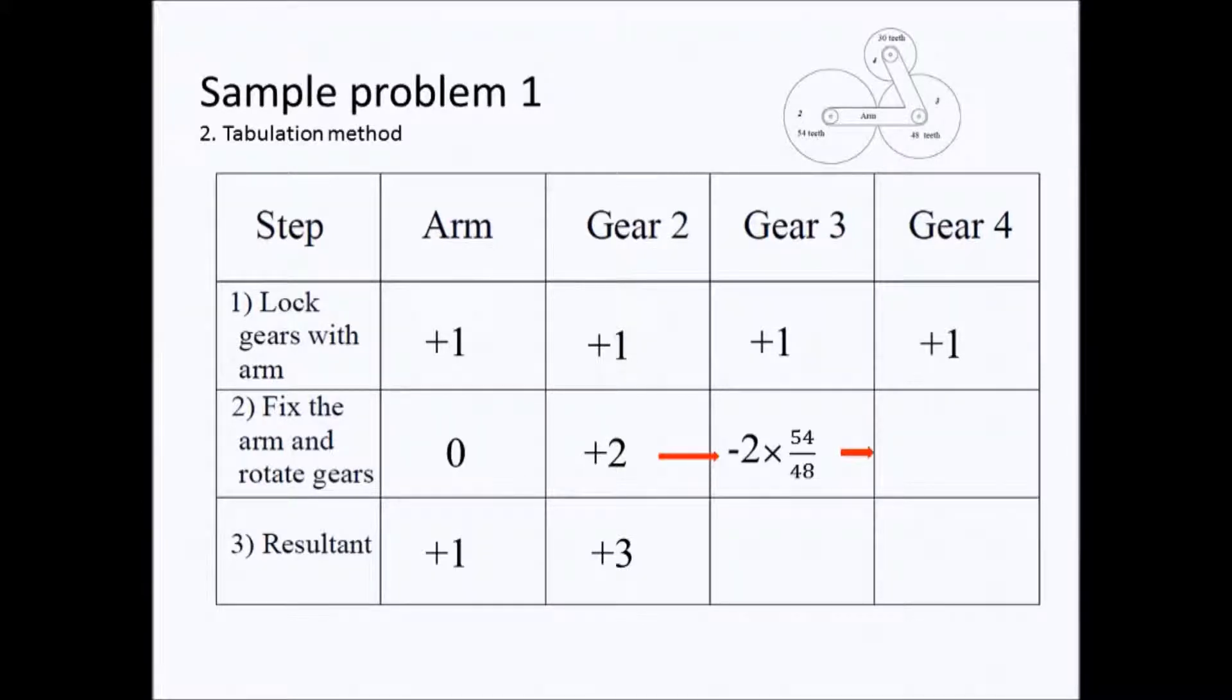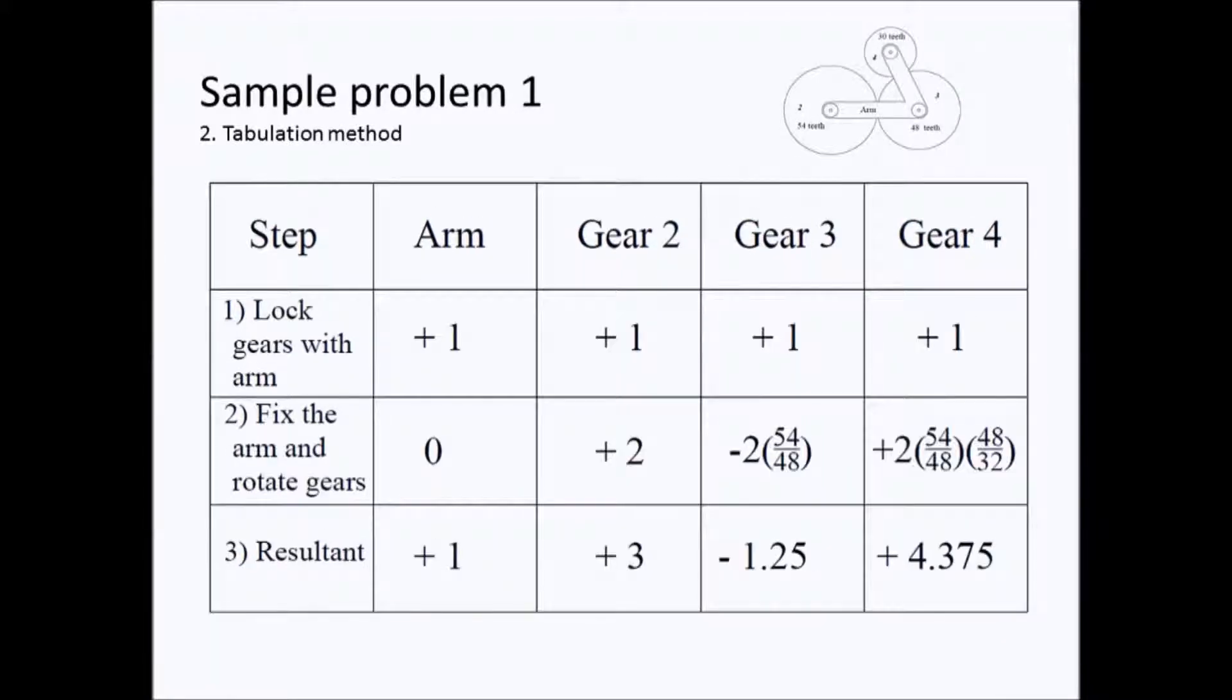And then after this we can add, we will have our resultant rotation for gear three and our resultant rotation for gear four. We now have our solution for the epicyclic train problem.